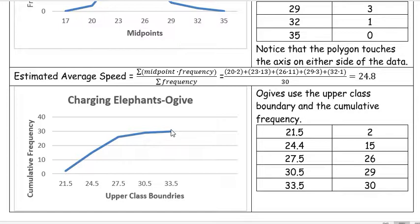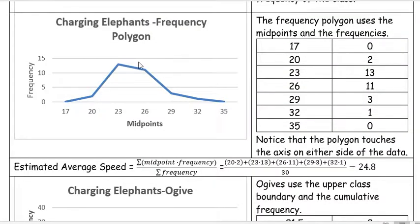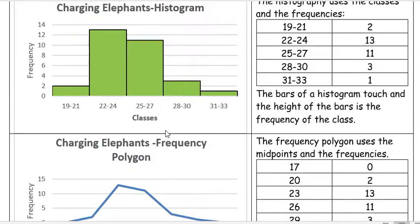Those are three different ways that you could graph, and for different reasons you're looking for different things. The thing I would point out again is: ogive uses boundaries and cumulative frequencies, frequency polygon uses midpoints and frequencies, and histograms use the classes and the frequencies.